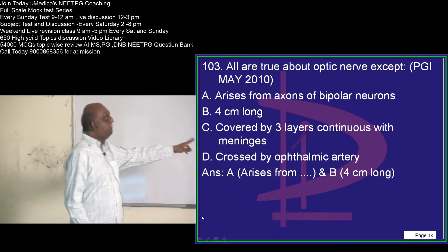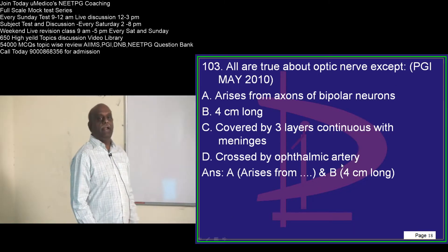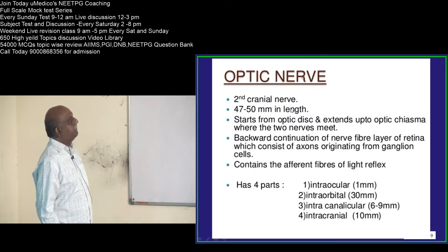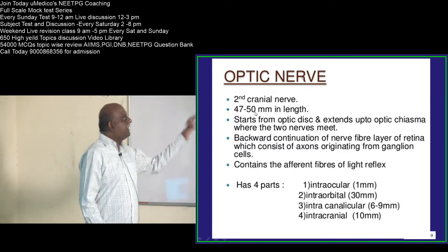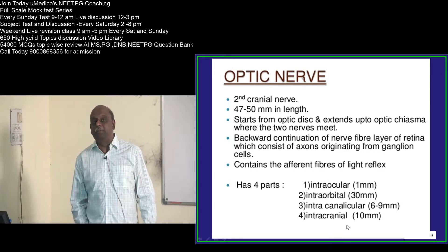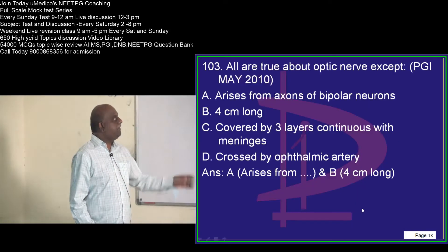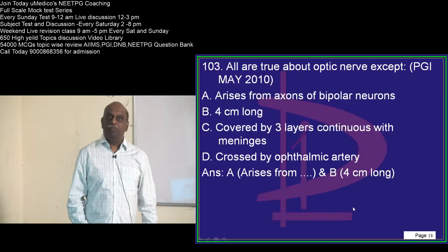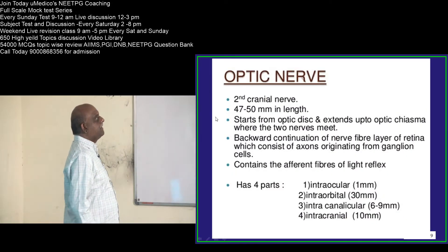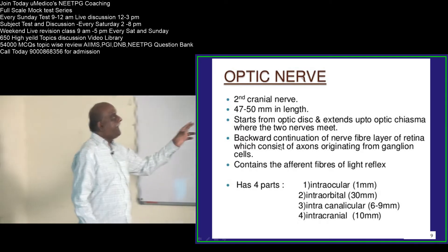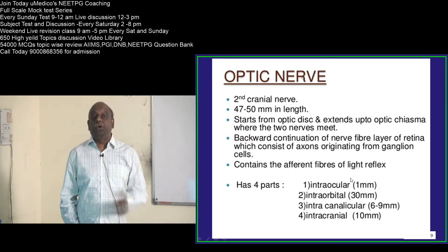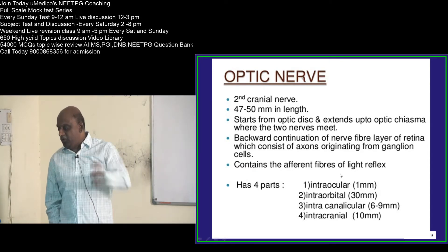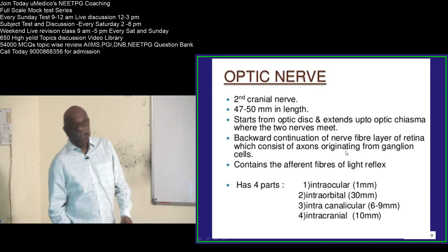The optic nerve is crossed by the ophthalmic artery and it is covered by three layers which are continuous with the meninges — that is the truth. The optic nerve is the second cranial nerve, as all of you know. Its length is 47 to 50 millimeters, that is 4.7 to 5 centimeters, not 4 centimeters. It is the backward continuation of the axons which originate from the ganglion cells, which are the second order neurons.